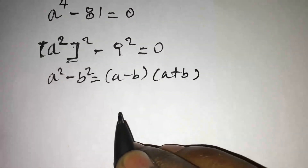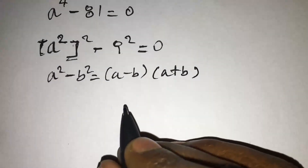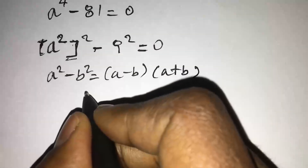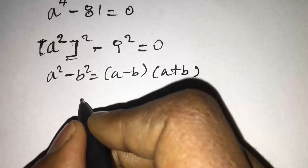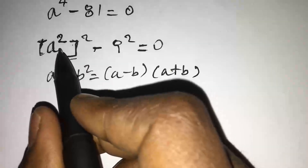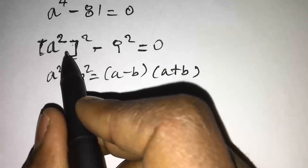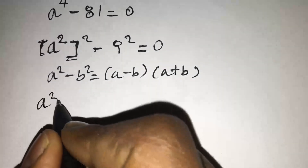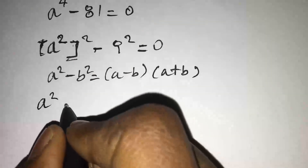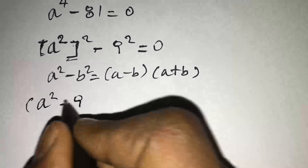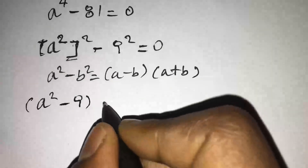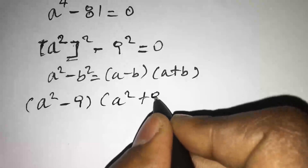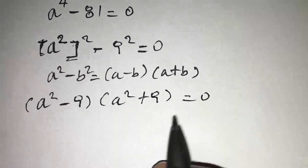So the value of this equation becomes A squared minus 9, times A squared plus 9, equal to 0.